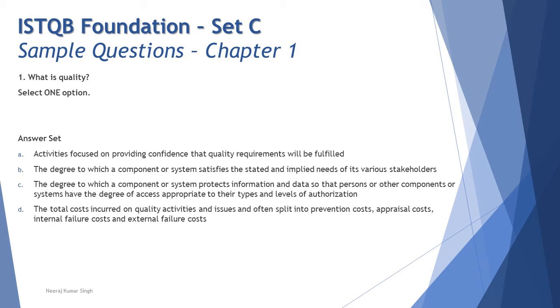Option B: the degree to which a component or system satisfies the stated and implied needs of its various stakeholders. If I go to a shop and ask you something and I get what I am looking for, I would call it as a quality service. The same way here, the degree to which a component or system satisfies the stated need of the stakeholder or the customer would be talking about quality and looks quite relevant.